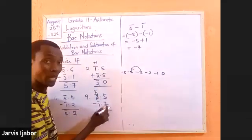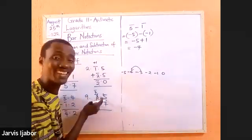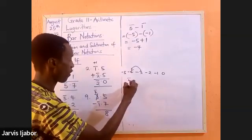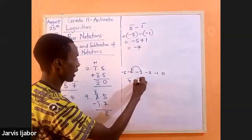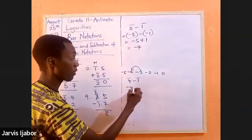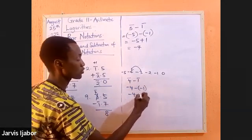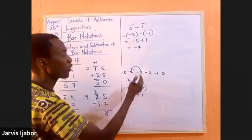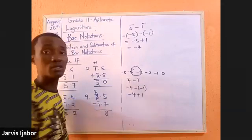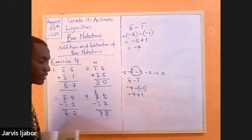So, you now have bar 4 minus bar 1. What does that mean? It means negative 4 minus negative 1, which is negative 4 plus 1. So, start from negative 4, move one step forward, and that will be negative 3 or bar 3. So, that answer becomes bar 3.8.